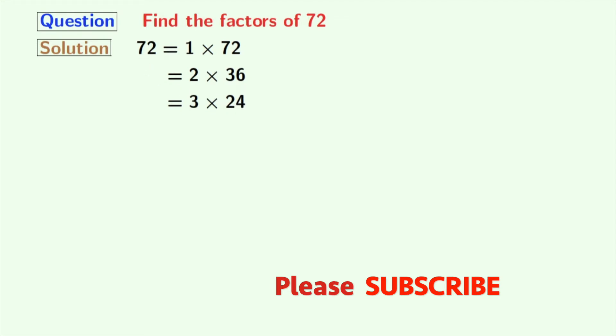The next number, 4, also divides 72 and we have 4 times 18 equal to 72. The next number is 5, but it does not divide 72, so we will move to 6. And see that 6 times 12 is equal to 72.